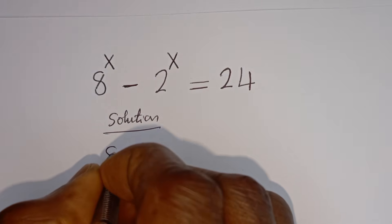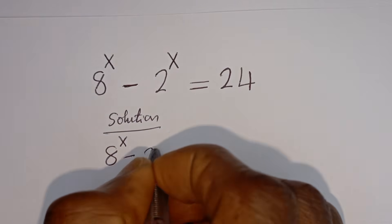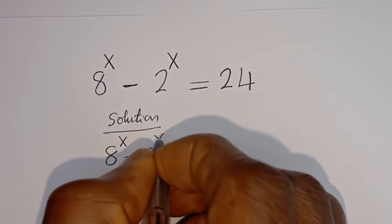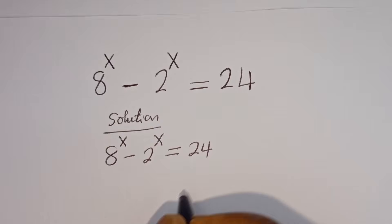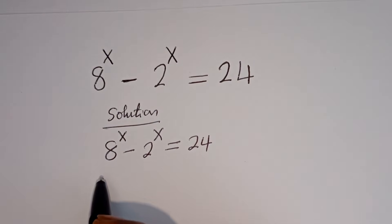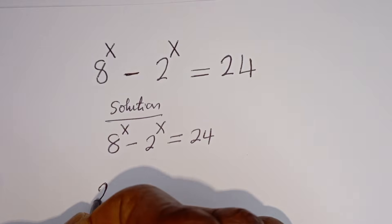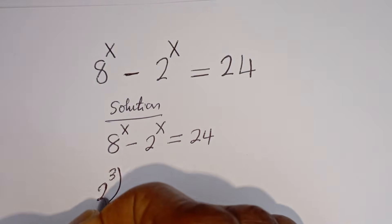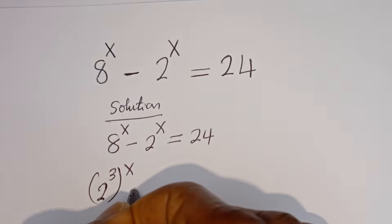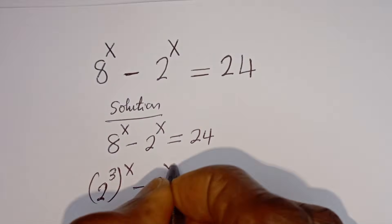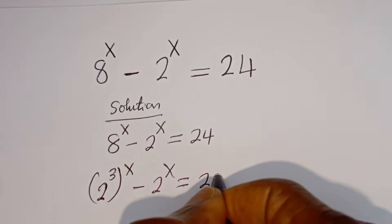We have 8 to the power of x minus 2 to the power of x is equal to 24. Now, 8 to the power of x can be written as 2 to the power of 3, to the power of x, minus 2 to the power of x is equal to 24.